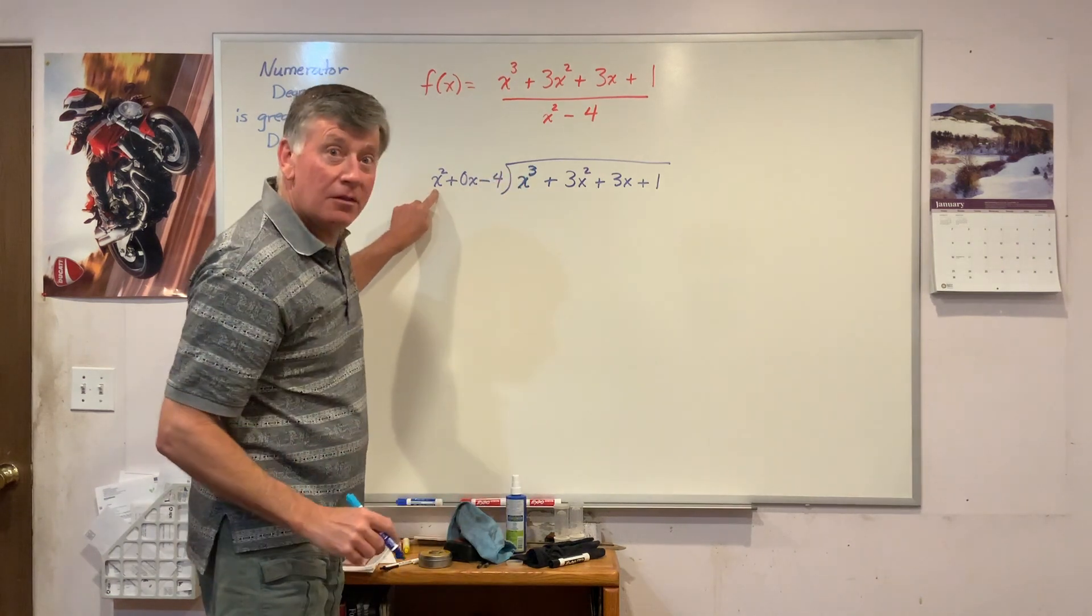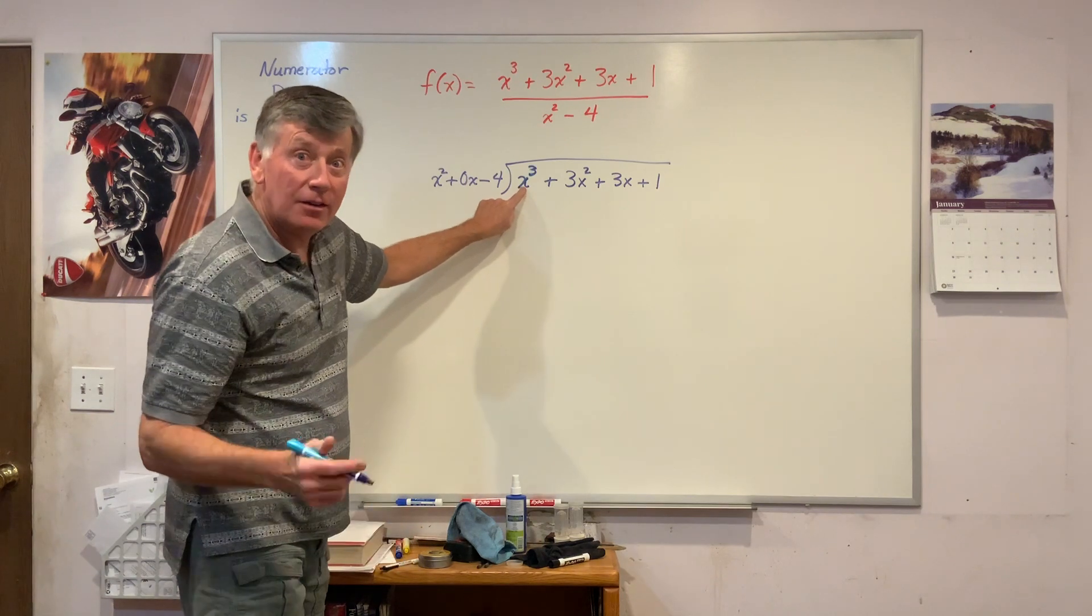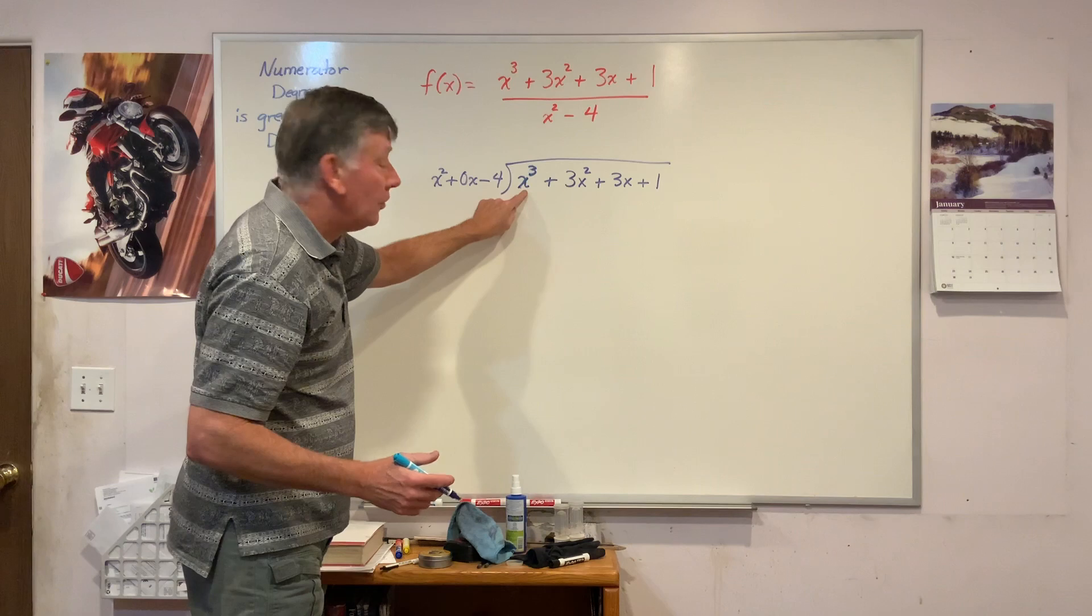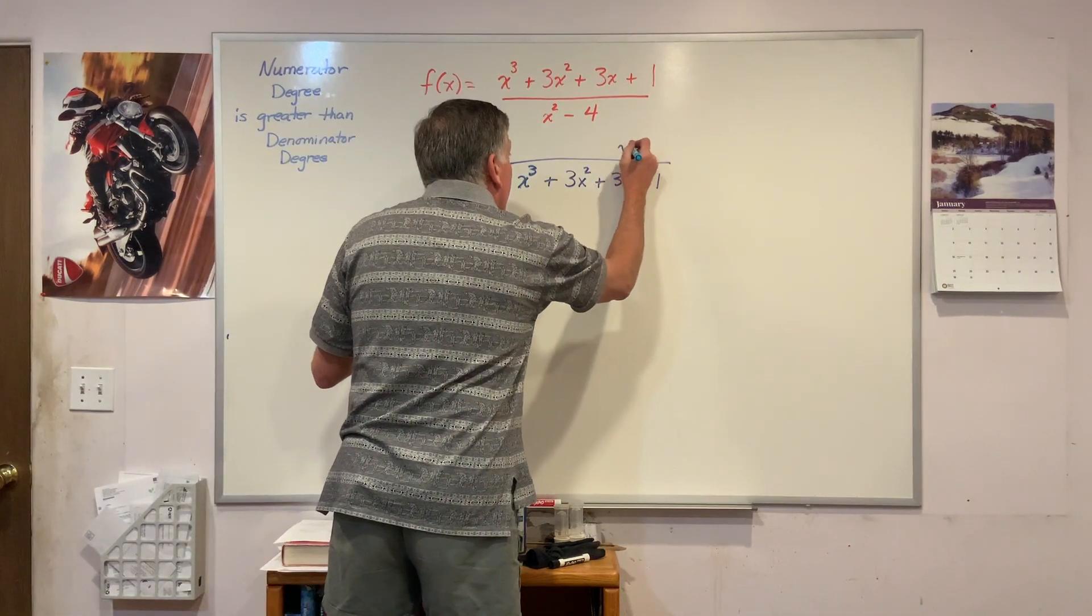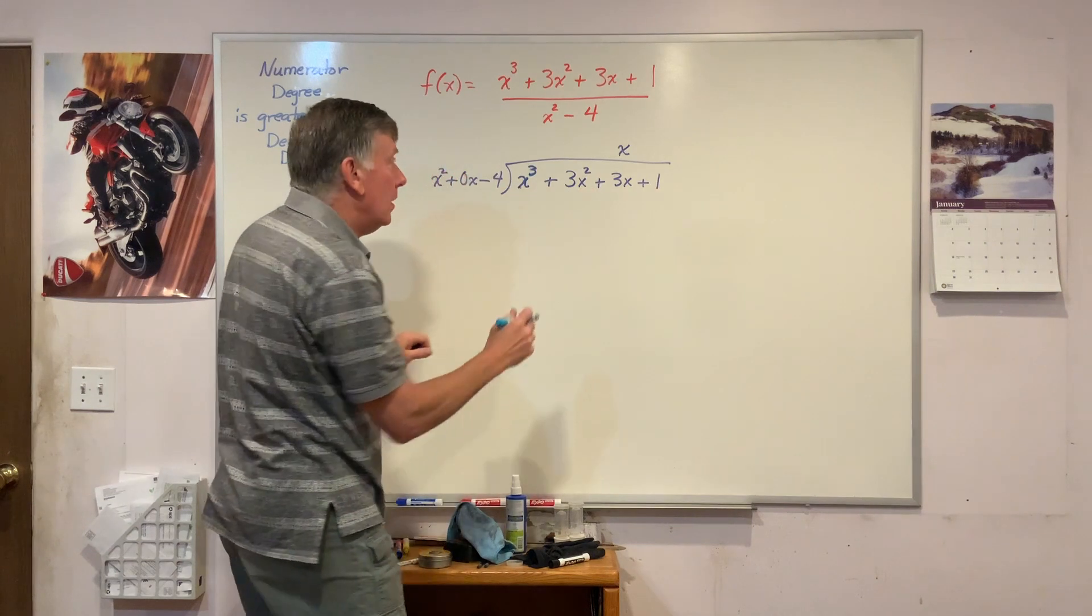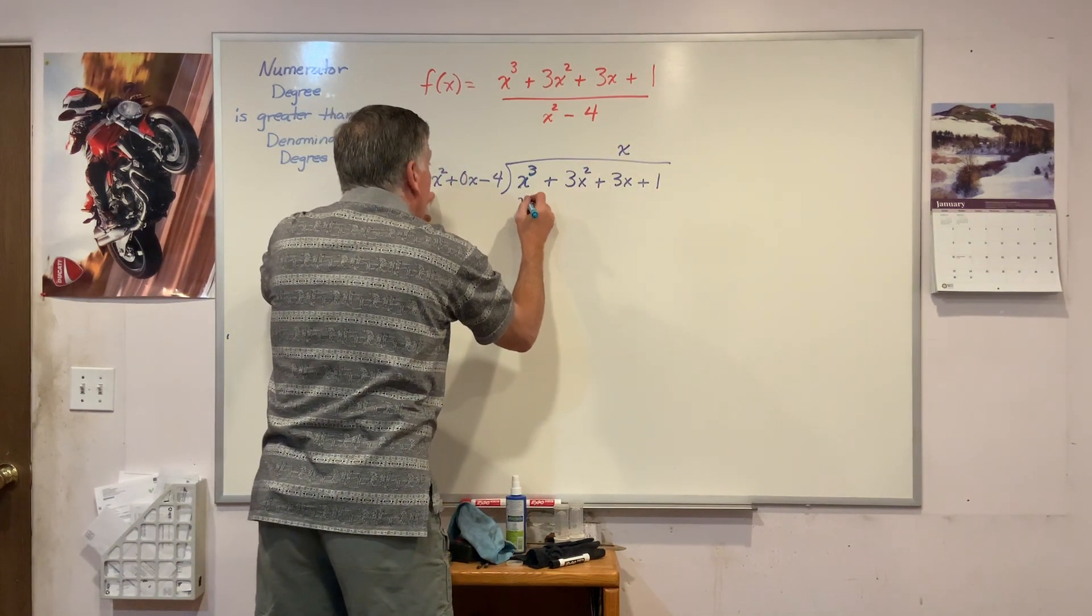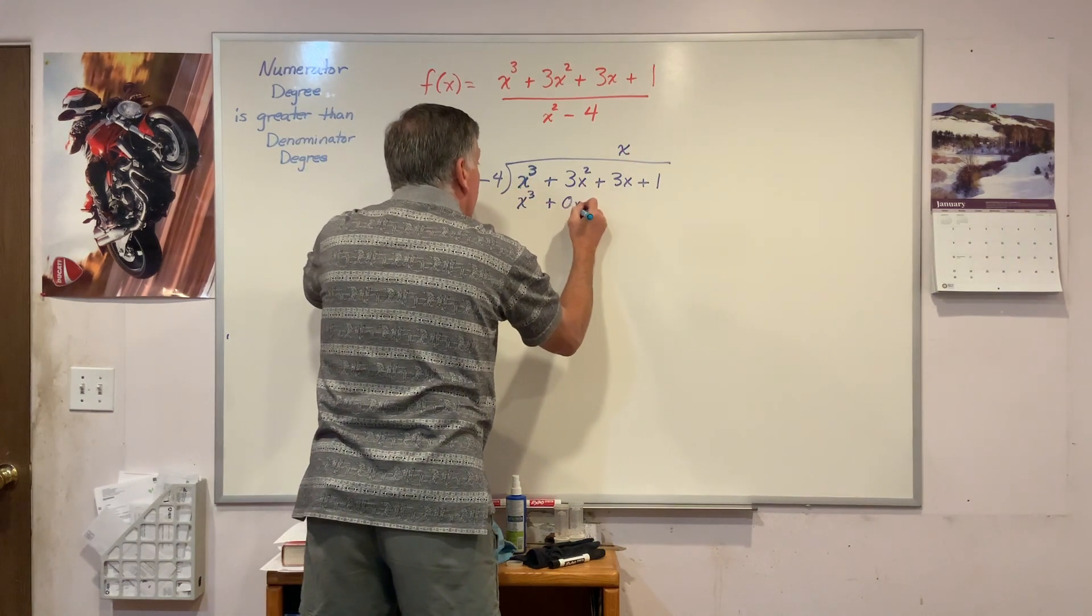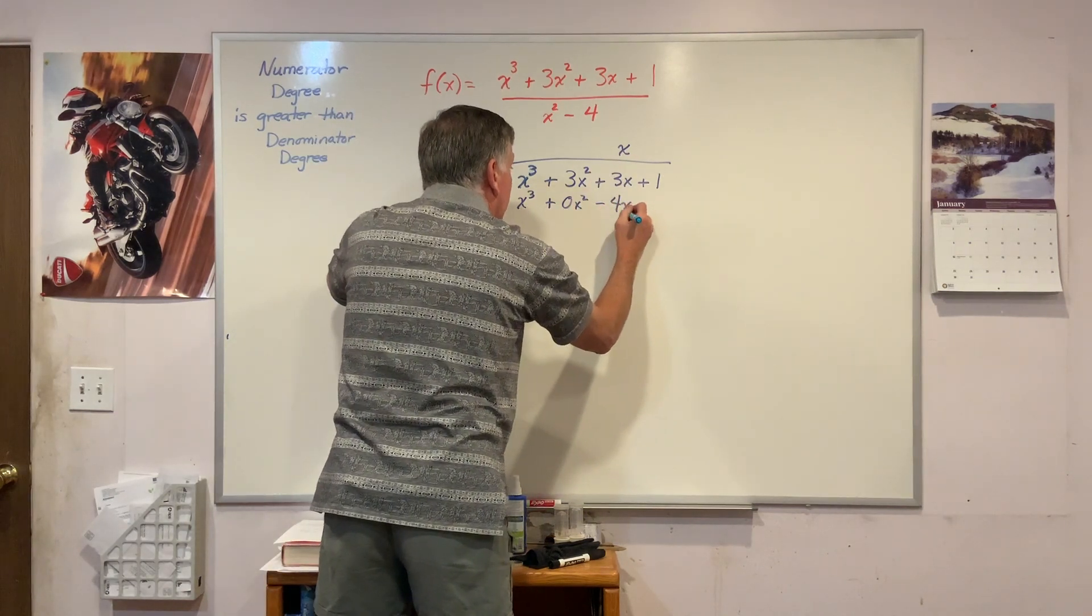I asked myself, how many times will x squared go into x cubed? That is, what do I need to multiply x squared by to get x cubed? X. Write it there in my x column. Now I do the multiplication. x times x squared is x cubed, which is what I want. x times 0x is plus 0x squared. x times minus 4 is minus 4x.